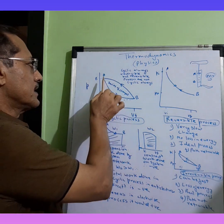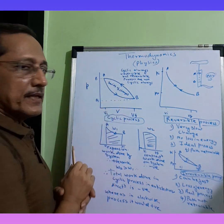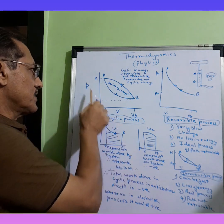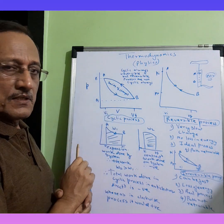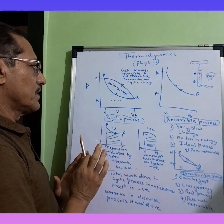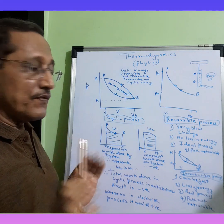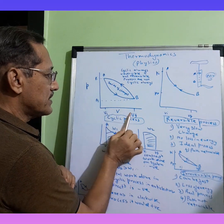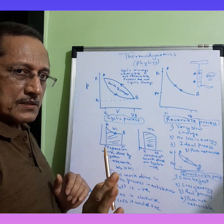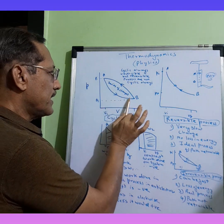Suppose the process is going from A to B and coming back from B to A. As mentioned earlier, these are all PV graphs. In cyclic process, this is what happens. Now let's talk in terms of energy — P·ΔV, where ΔV is the change in volume. P·ΔV represents work.